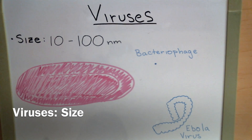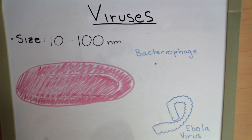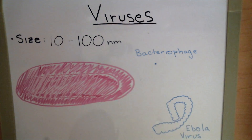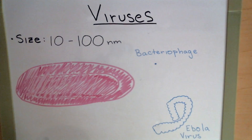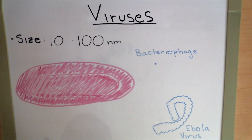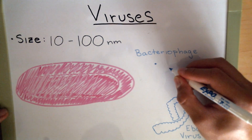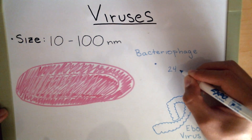Looking at the size of viruses, they range anywhere from 10 to 100 nanometers. Although that may seem like a lot, let's take a look in comparison. Over here we have a small bacteriophage — and this is not a little speck, but shows in retrospect how small viruses can be. A bacteriophage can be as small as 24 nanometers.